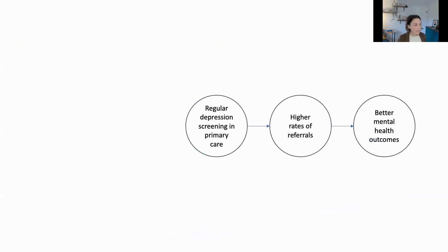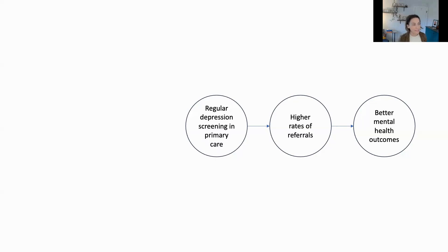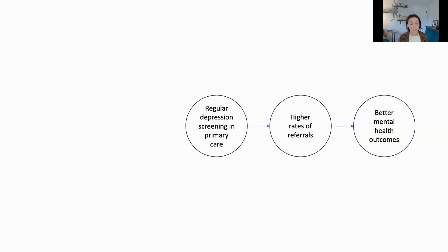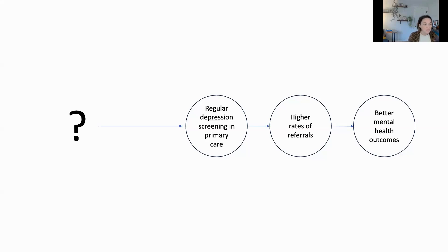I wanted to get us started with an example. We know that regular depression screening in primary care can lead to earlier detection of depression, and this works by increasing higher rates of referrals to care when needed, with downstream improvements in mental health outcomes as well. We also know that getting clinicians to administer depression screenings regularly is challenging. So the question is, what can we do to address this problem?